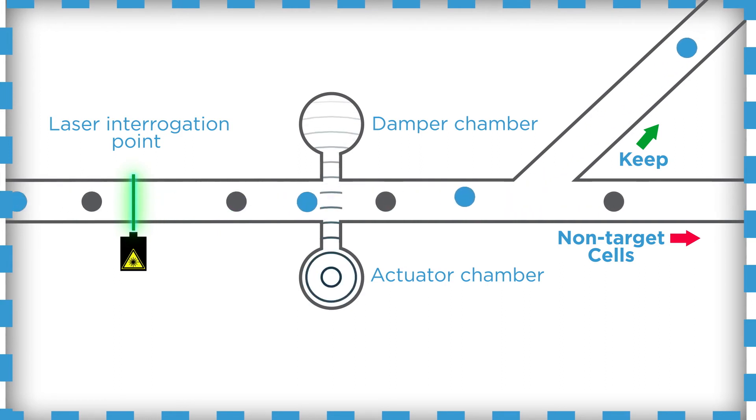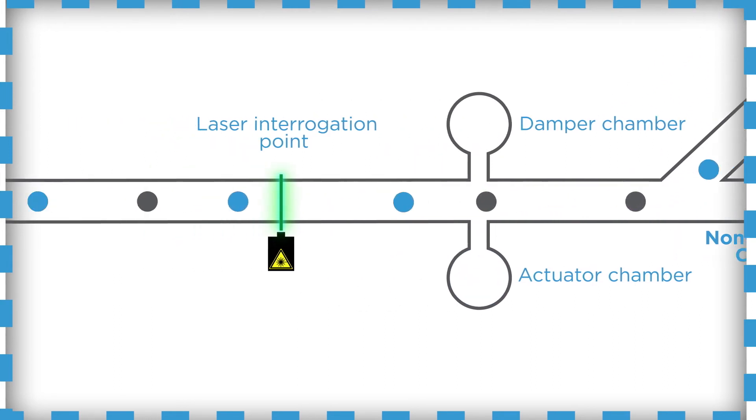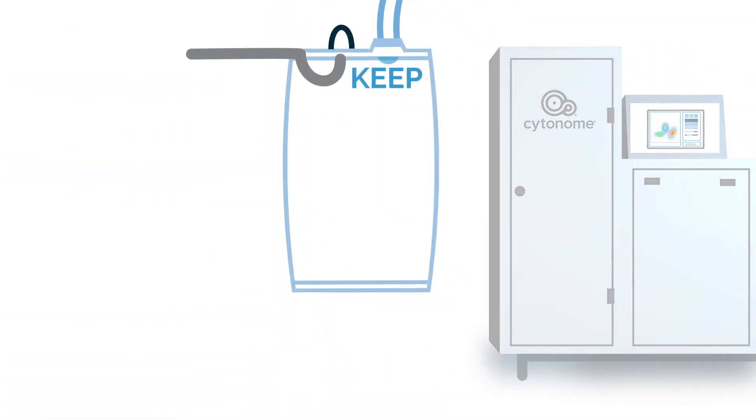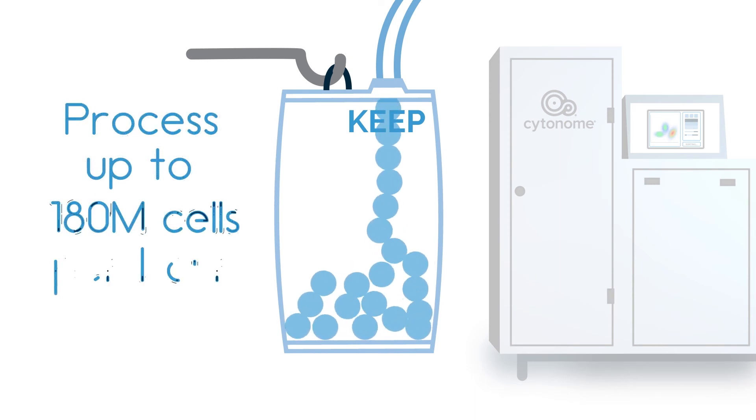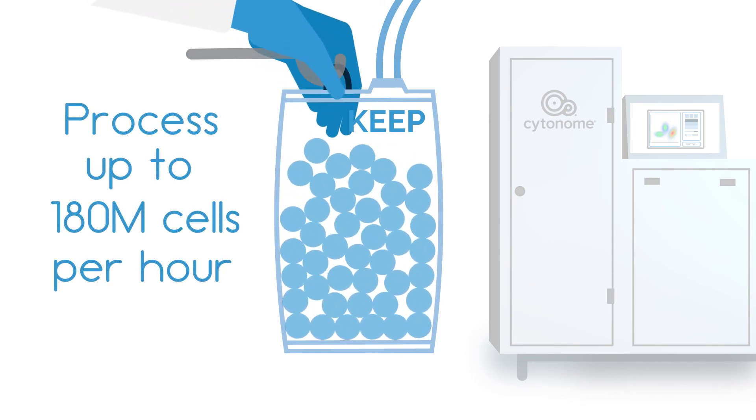The GIGASORT platform achieves high throughput by combining 24 individual microsorters on a single chip. Together they're able to process up to a hundred and eighty million cells per hour.